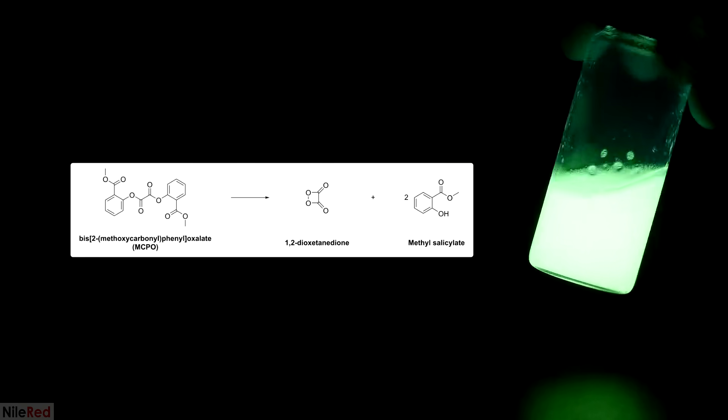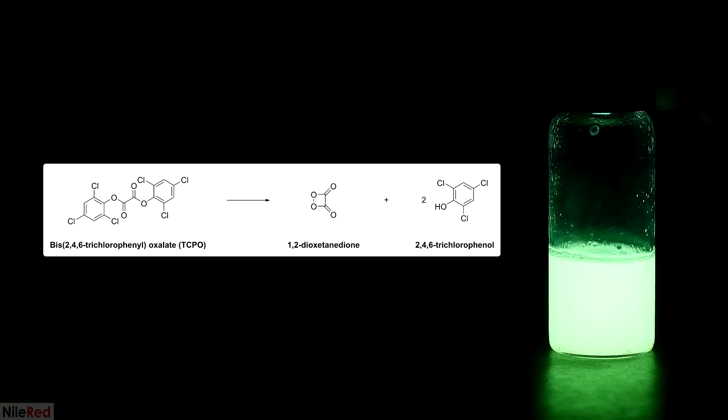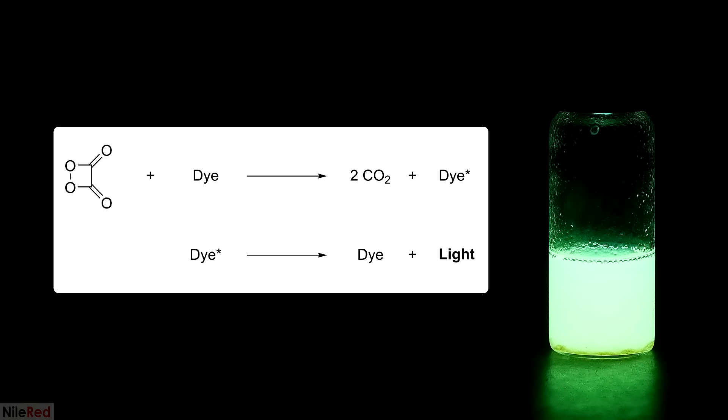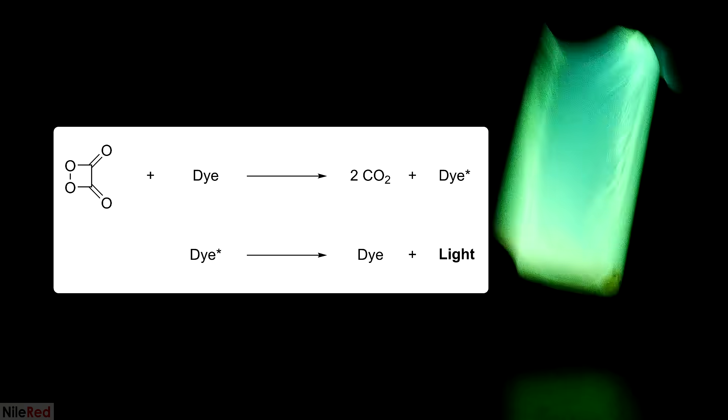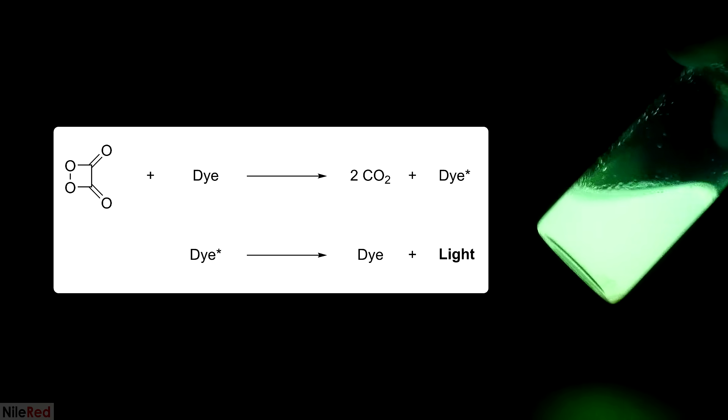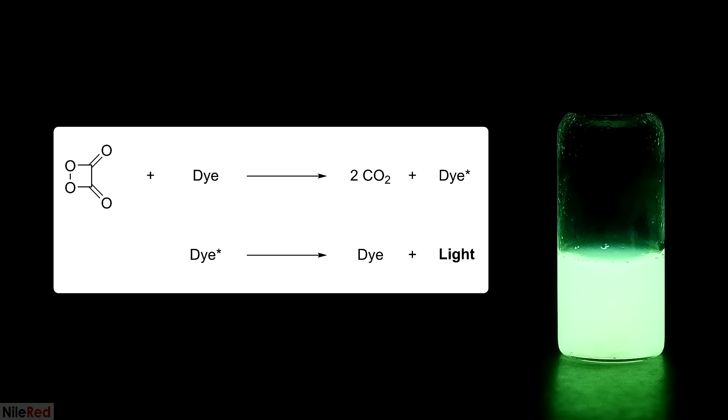The reaction that's going on here is between MCPO and peroxide, which leads to the formation of an excited state intermediate called 1,2-dioxetanedione. As a side product, it also reforms the methyl salicylate. This is in contrast with the TCPO, which reforms the environmentally mean 2,4,6-trichlorophenol. The 1,2-dioxetanedione then breaks down to CO2 gas, and at the same time it transfers energy to the fluorescent dye. The dye becomes excited, and as it relaxes back to its ground state, it releases light. The color of light that's released by this reaction depends entirely on the dye that's used.